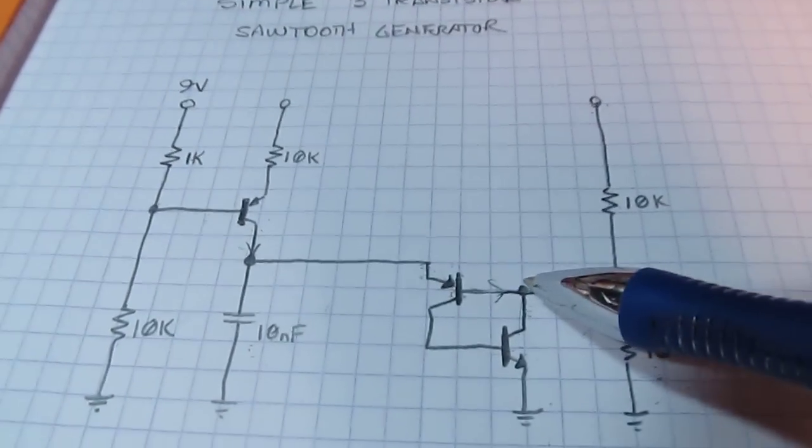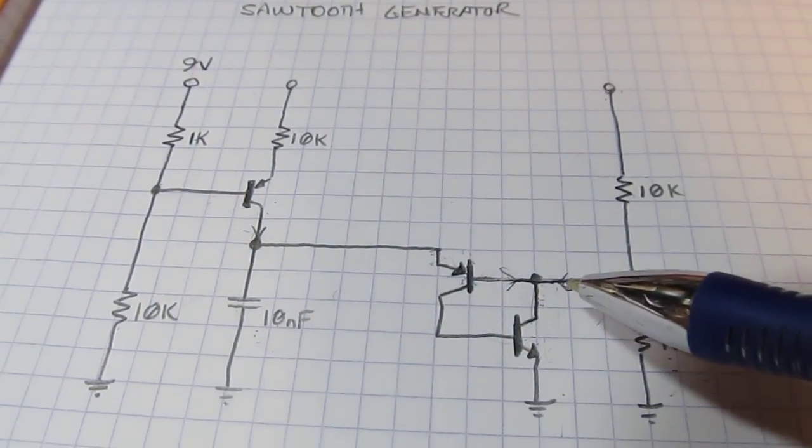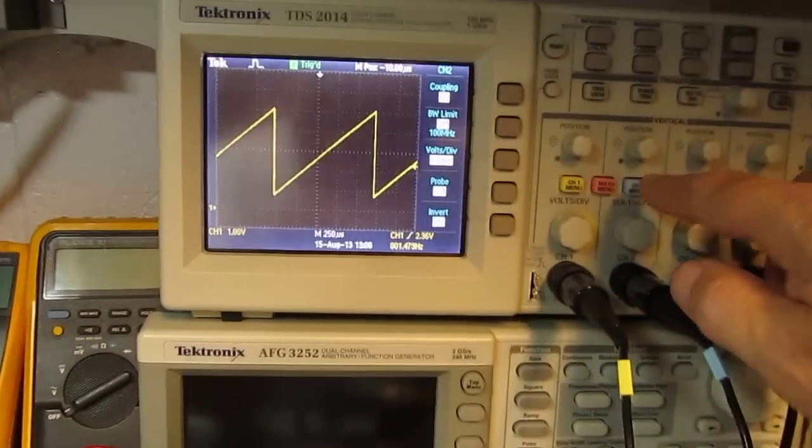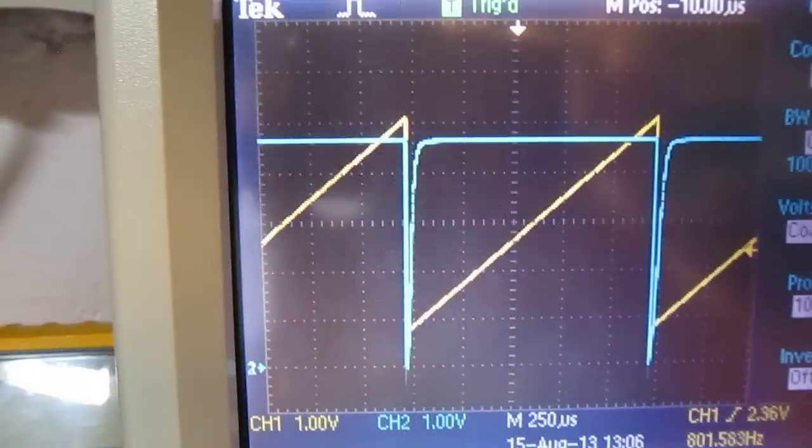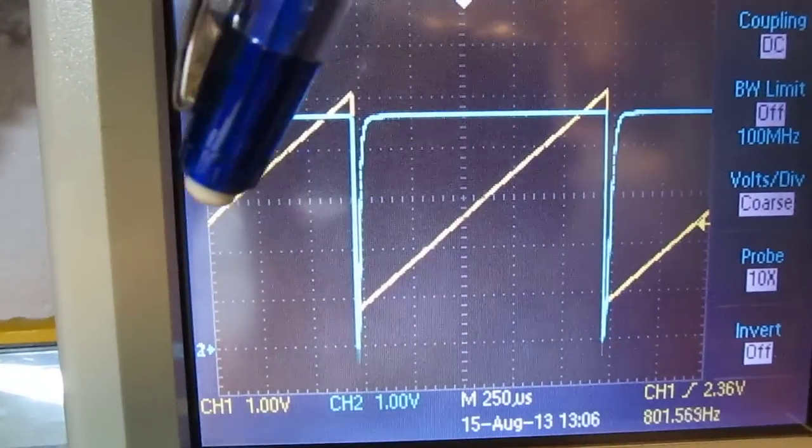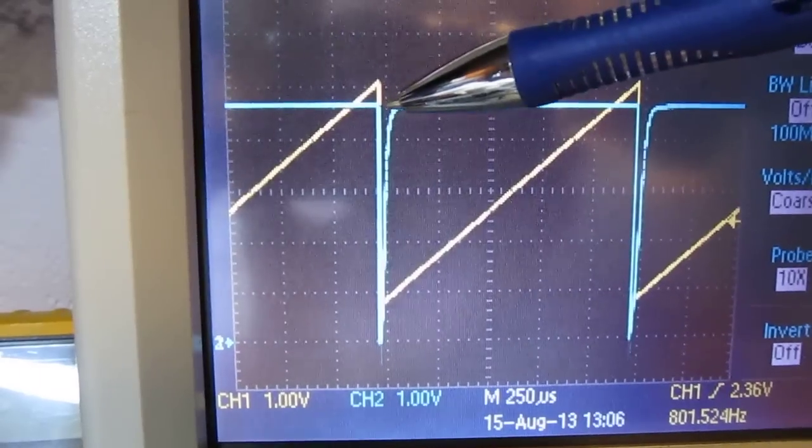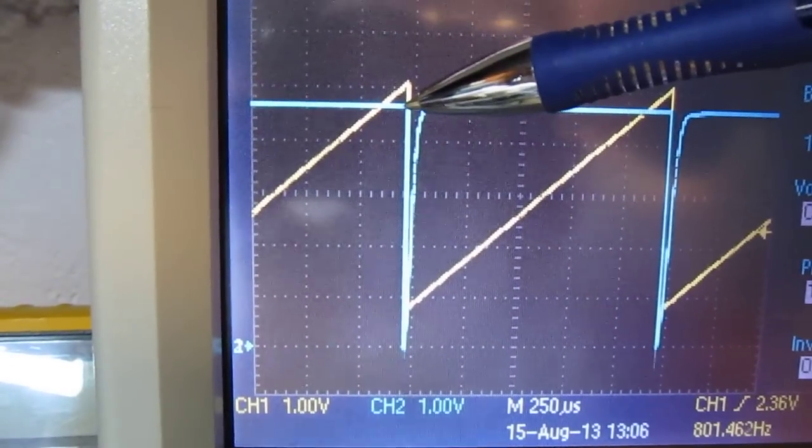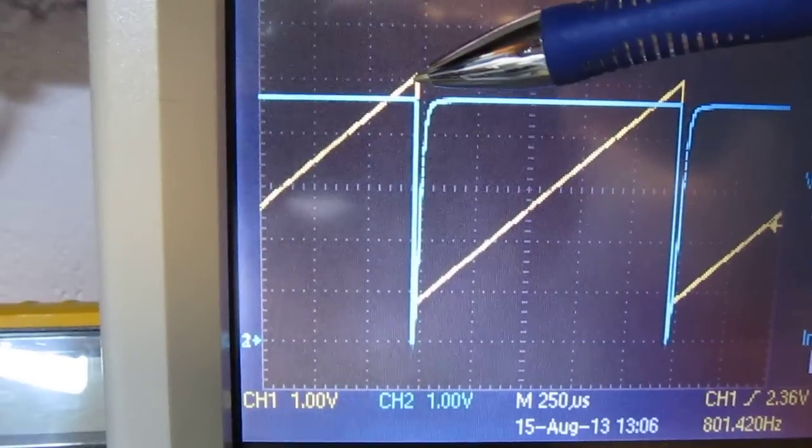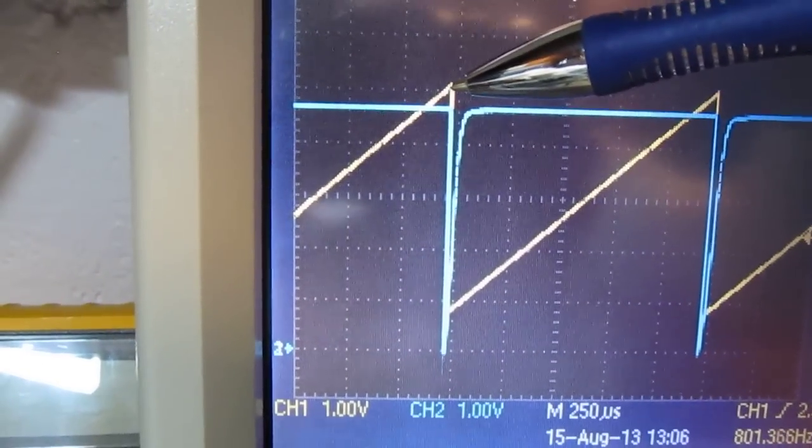It's kind of also interesting to look at what's going on at this node here. We can kind of see that quick discharge action. So on channel two of the scope, if we turn that on here, that's that blue trace. So we can see that as the capacitor voltage charges up, once it gets about six tenths of a volt or so above that four and a half volt bias voltage, that PNP turns on.